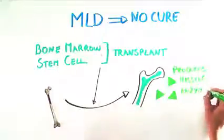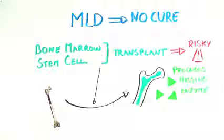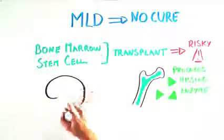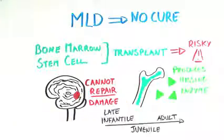Transplant for metabolic disease has improved over the years, but is still extremely risky. Because transplant cannot repair the damage already done to the brain and peripheral nerves, it is not effective for the late infantile form of MLD once symptoms have appeared, because of the rapid progression of this form of the disease.